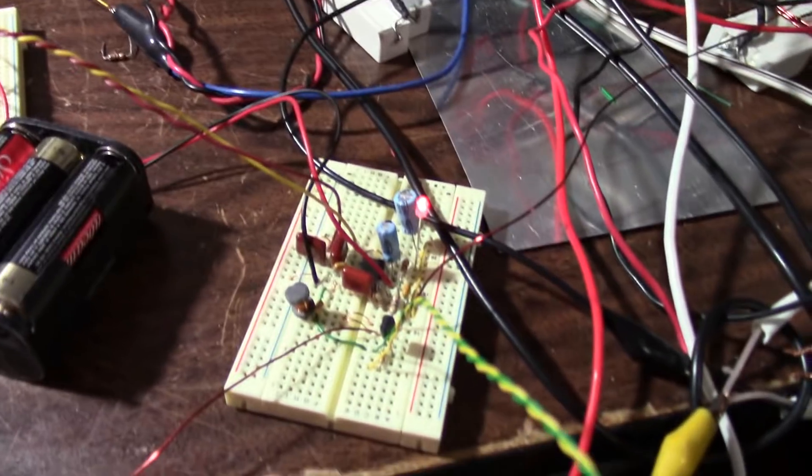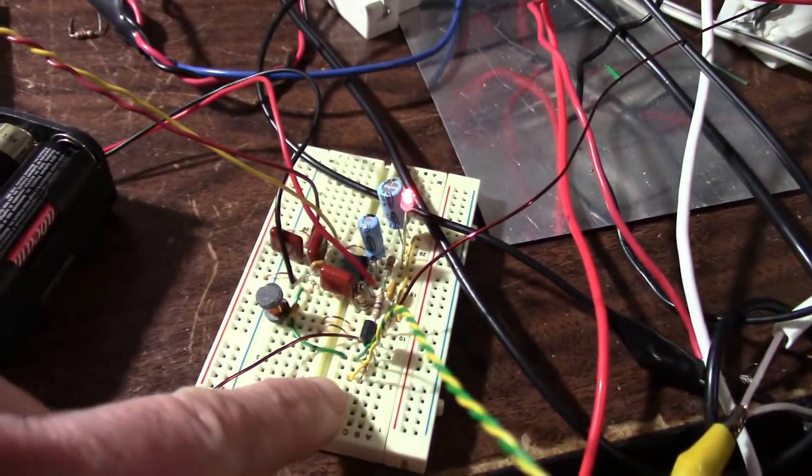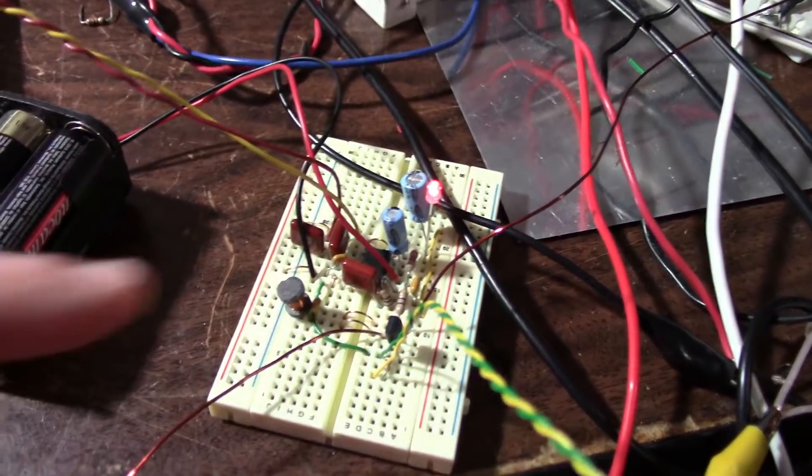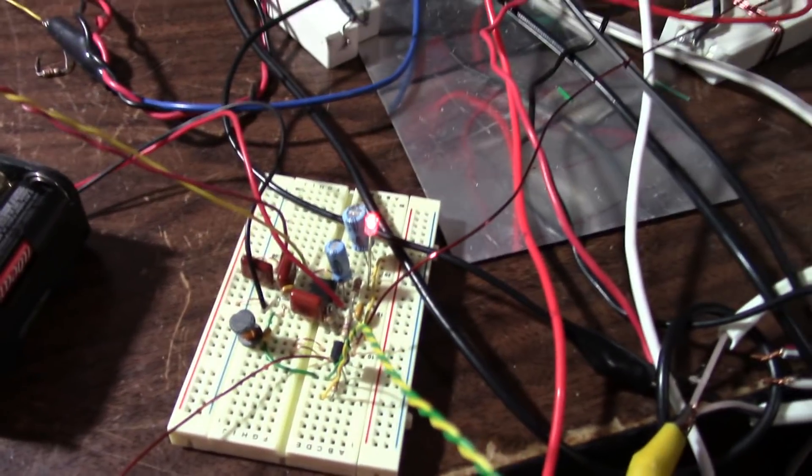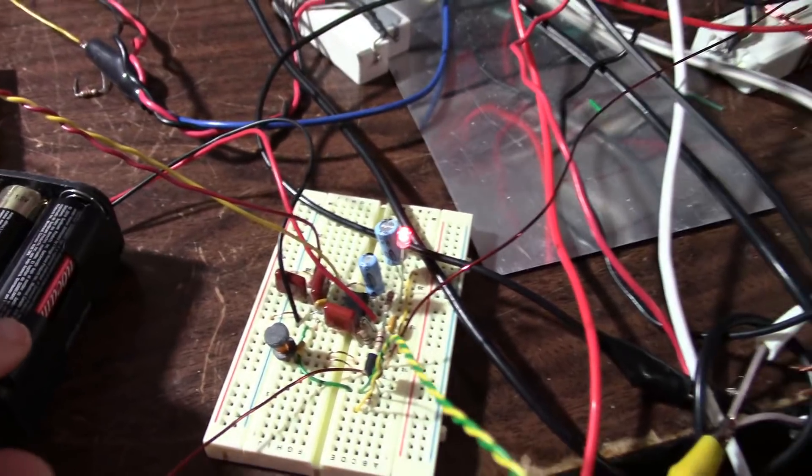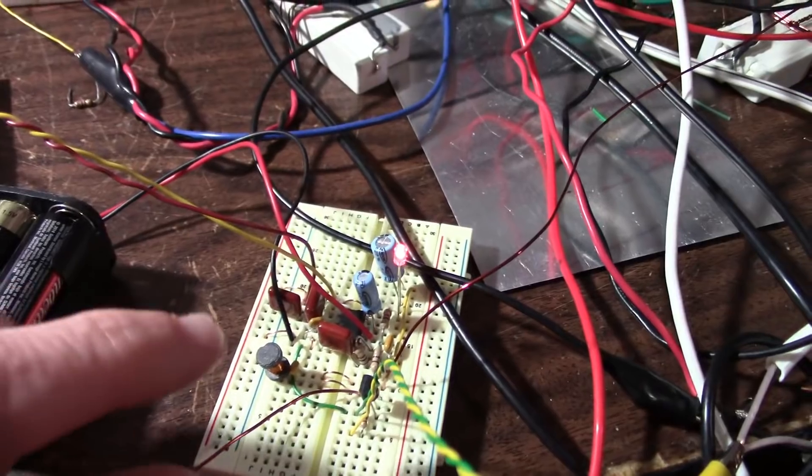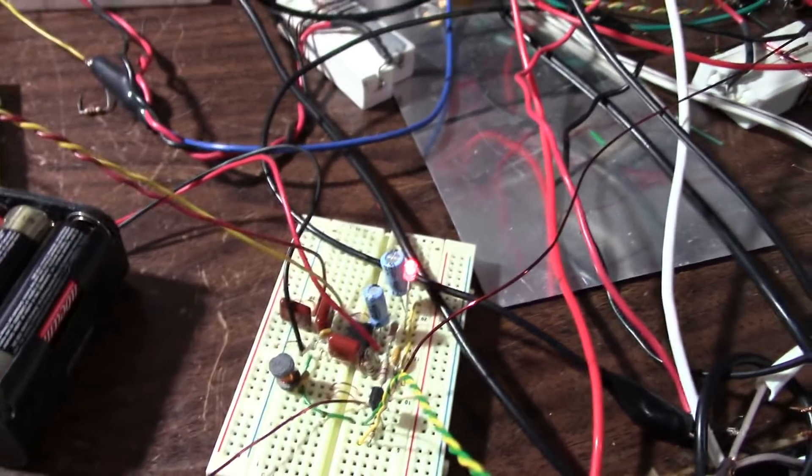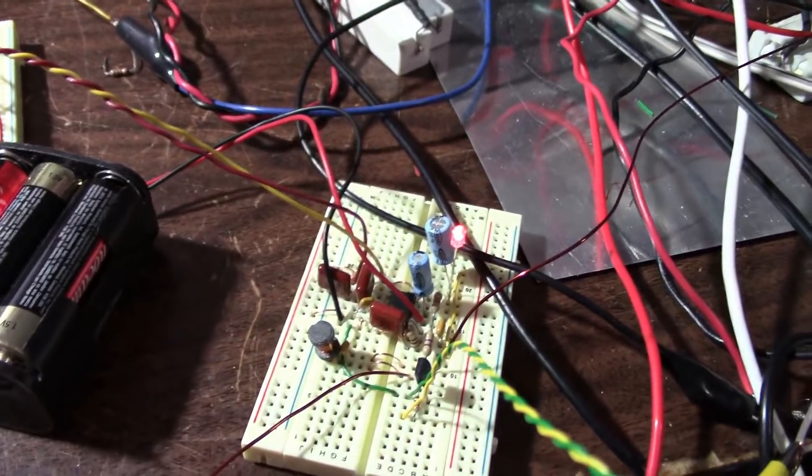But anyway a couple other notes on this circuit. As it stands the circuit only draws about 12 milliamps with the RF turned on. So you can use it with those little square 9 volt batteries. Might use a little bit more if you add an oscillator circuit. But still you know it should be 9 volt battery friendly.